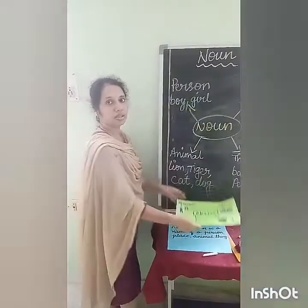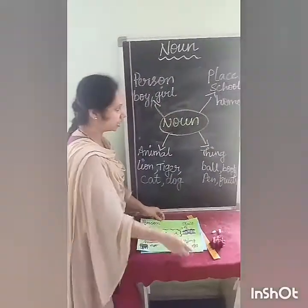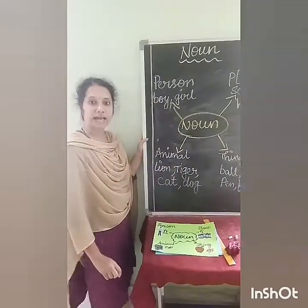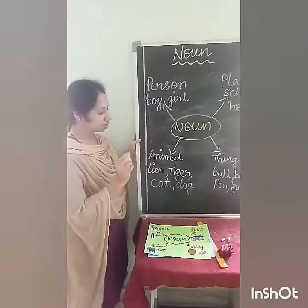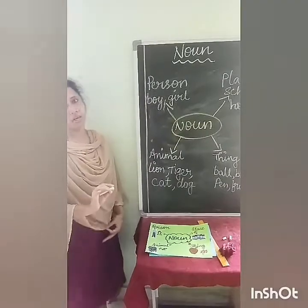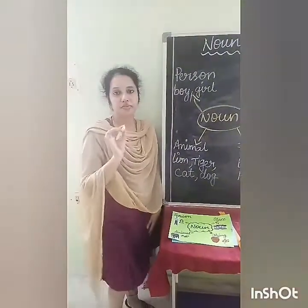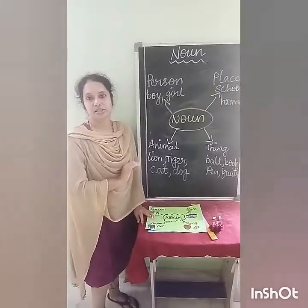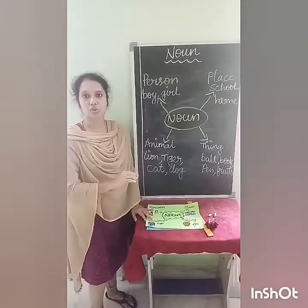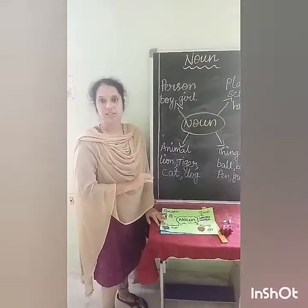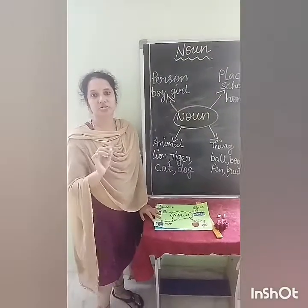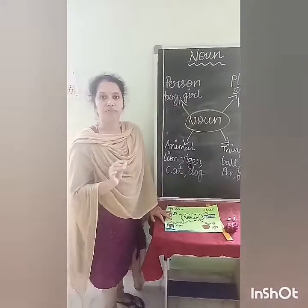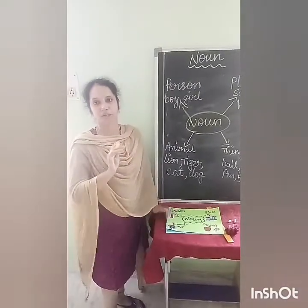Now, whenever we are writing the name of a person, place, animal, or thing, we have to start with a capital letter. We are calling these names 'naming words.' Naming words are also called nouns. These are special names — we should start with a capital letter. Now in noun, we have common nouns and proper nouns also.